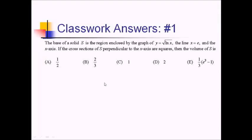For this one, the base of a solid is the region enclosed by the graph of square root of ln of x. We also have the line x equals e and the x-axis. Cross-sections perpendicular to the x-axis are squares. Based on that, we want the volume of S.